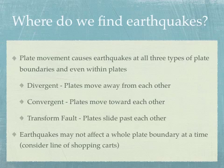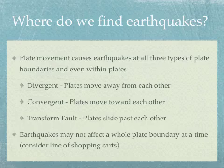So where do we find these earthquakes? Remember the three different types of plate boundaries? Plate movement causes earthquakes at all three types of plate boundaries, and sometimes even within the plates. As a review: divergent boundaries where plates move away from each other, convergent boundaries where plates move towards each other, and transform boundaries where plates slide past each other. Earthquakes can occur at all three types. However, earthquakes may not affect a whole plate boundary at a time — think of a whole row of shopping carts. Not all of them may move at the same time.